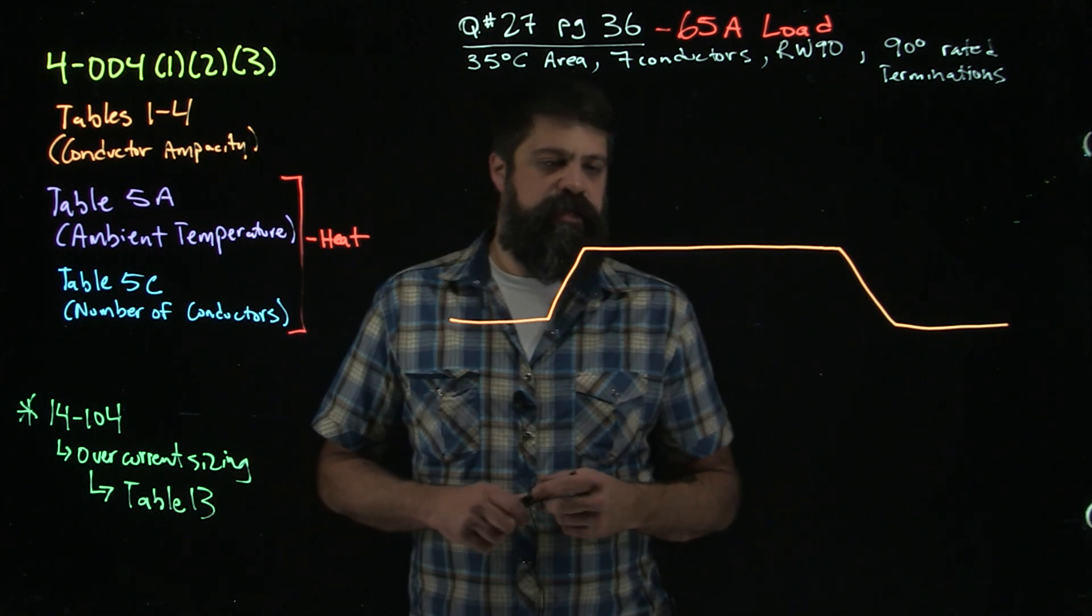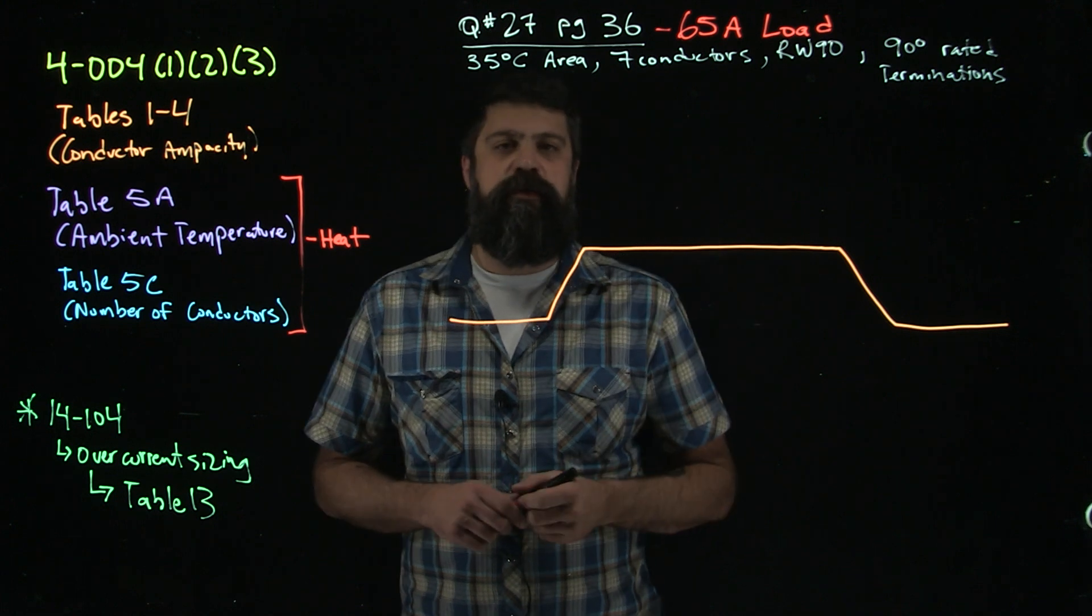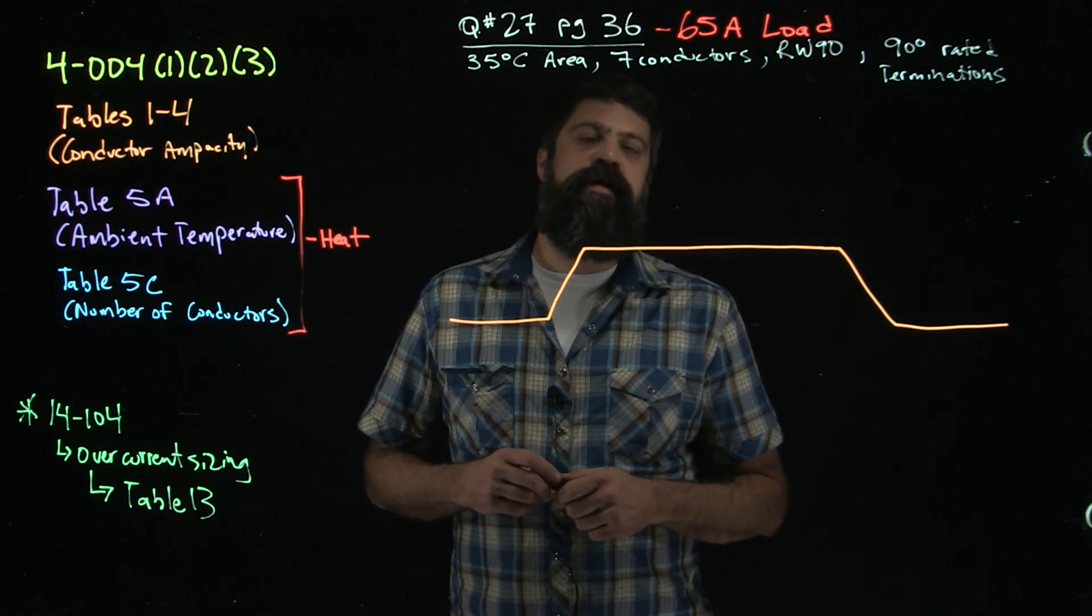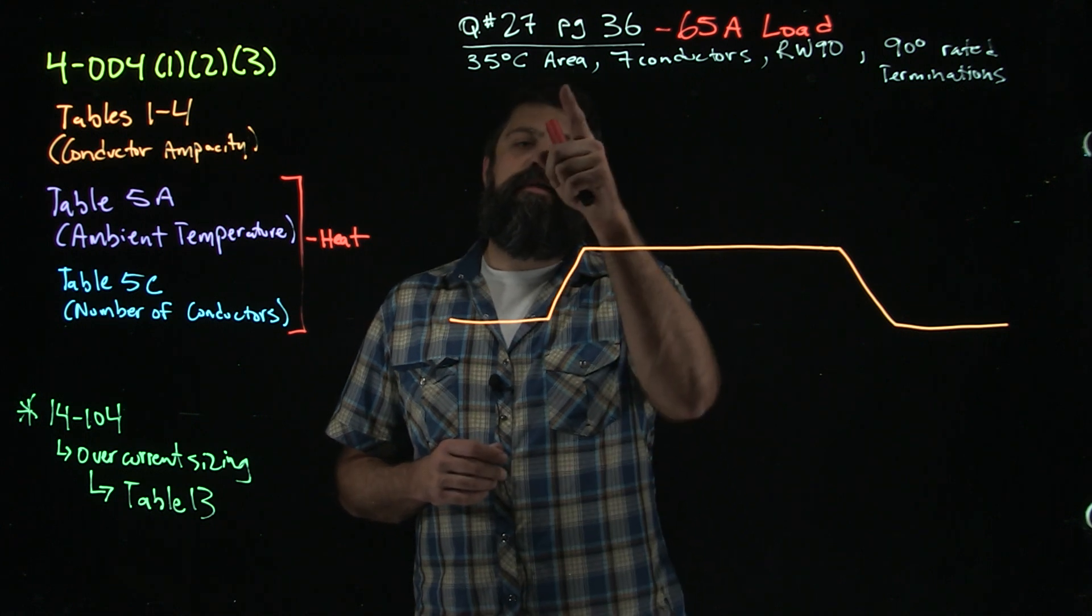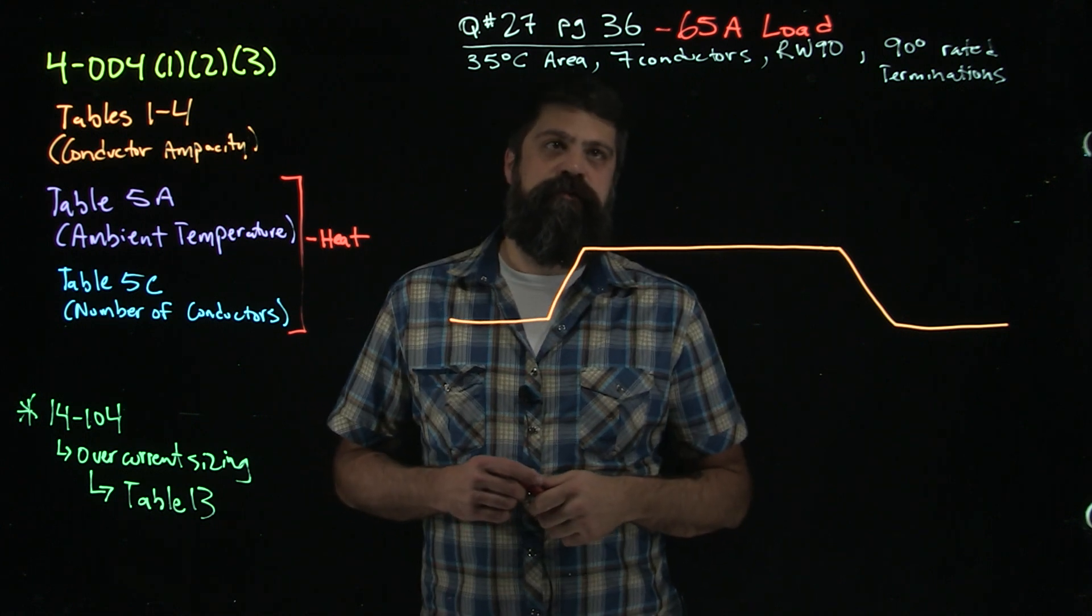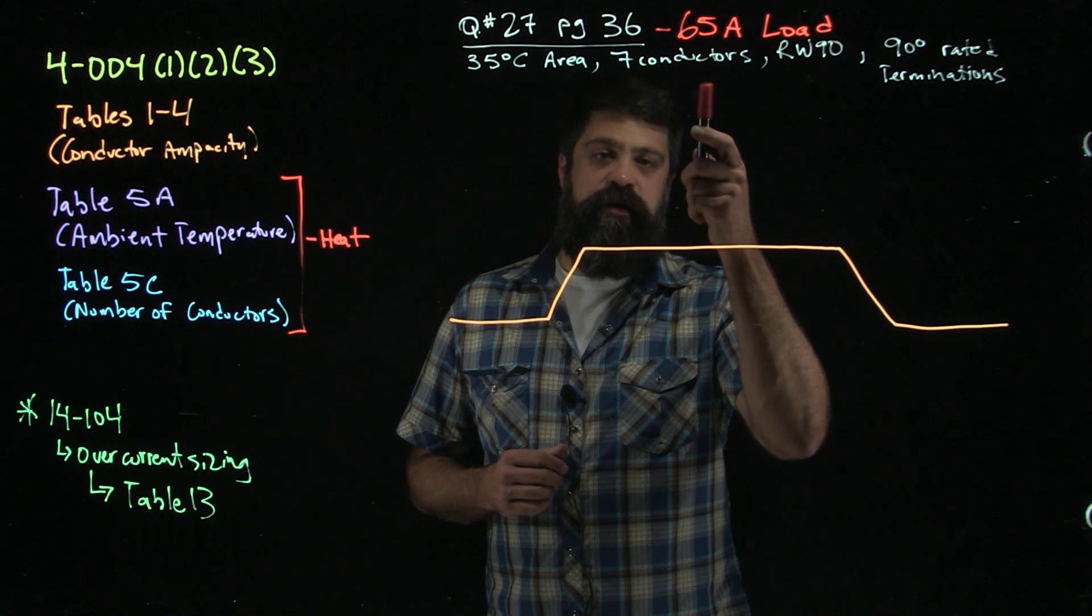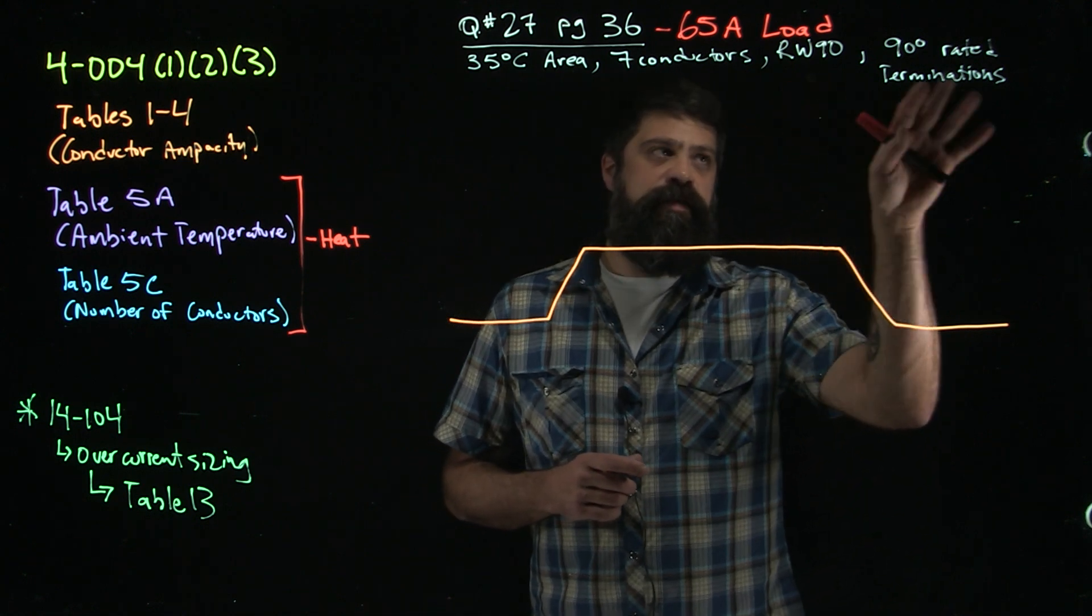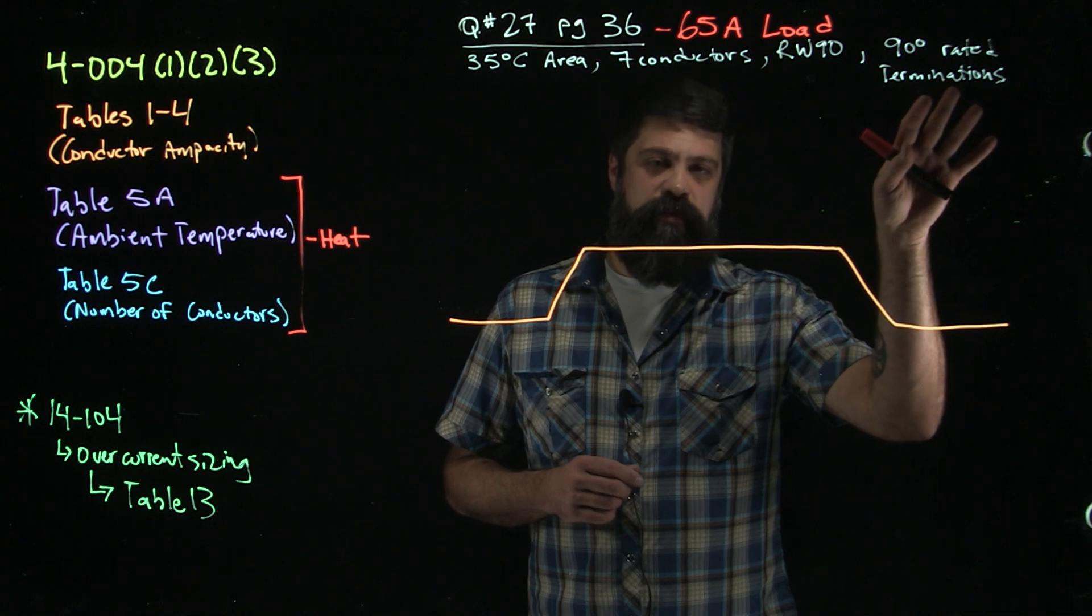We'll do the same thing as we did last time. This time we're going to be in question number 27 on page 36 of your workbook. We're going to start with a 65 amp load, but to get there we're going to have to go through an area that's 35 degrees. We're going to have seven conductors total inside of that conduit that's going to be run in RW90, and this time everything is 90 degree rated terminations.